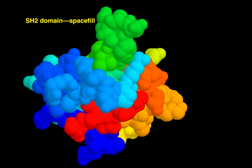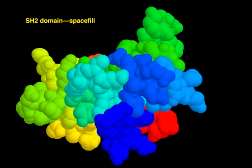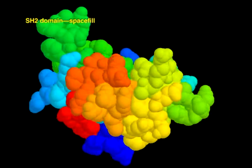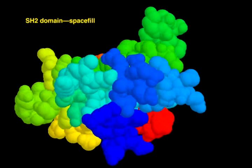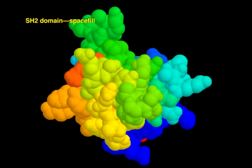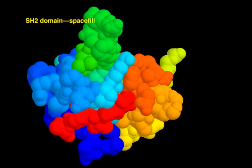A space-fill view depicts each atom in the polypeptide as a solid sphere. The radius of the sphere represents the van der Waals radius of the atom. The coloring scheme follows the same rainbow spectrum used before, with the N terminus red and the C terminus blue.